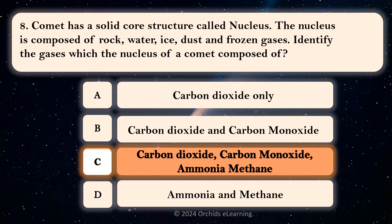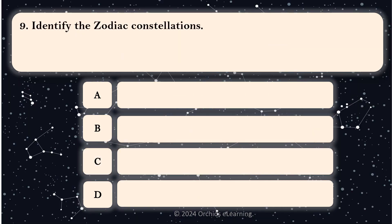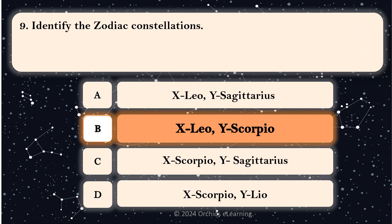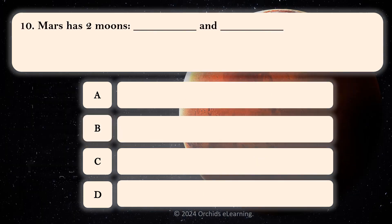Identify the zodiac constellations. B. X: Leo, Y: Scorpio.